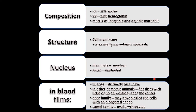Different species show distinct RBC characteristics on blood smears. Dogs have distinctly biconcave RBCs. In other domestic species they are flat discs with little to no depression. Deer family members have somewhat elongated, sickled cells. Camelids have oval erythrocytes.